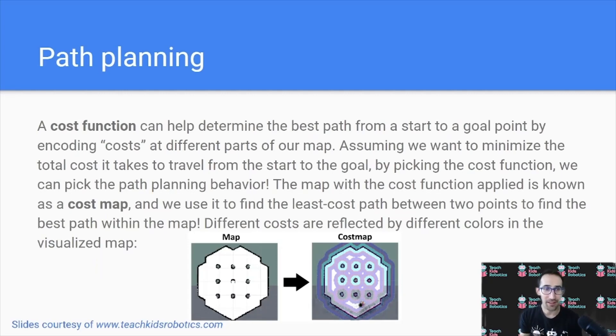In path planning, we have something known as a cost function, which can help determine the best path from a start to a goal point by encoding costs at different parts of our map. And using this cost function, we can help encode information about where we would or would not like to travel. For example, an obstacle can have a high cost associated with it, so that as we are determining how to travel between the map, if we are attempting to reduce the cost of a path, we would avoid any kind of obstacle. So this cost function allows us to determine the path planning behavior and the path we're going to take.